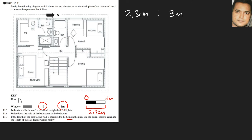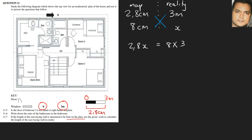We cross-multiply using the proportion: map is to reality. Eight centimeters is the distance on the plan, and we need to find the reality measurement x. Cross-multiplying gives us 2.8x = 8 × 3, so 2.8x = 24. Dividing both sides by 2.8 gives x = 8.6, and since the reality measurement is in meters, the answer is 8.6 meters.